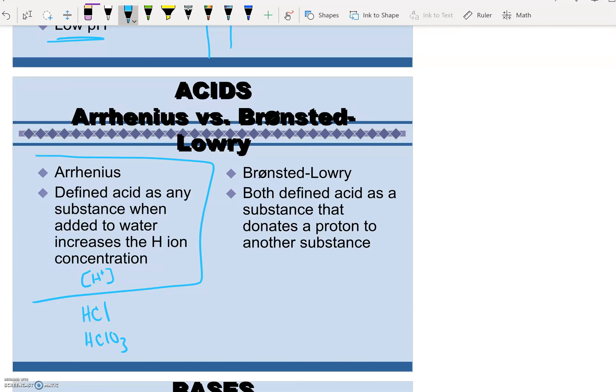But Bronsted-Lowry's definition, after you get out of Chem 1, this is always the go-to definition of acids because something can be classified as an acid without having an H in the front. So Bronsted-Lowry says that acids is a substance that donates a proton to another substance. If you need to pause the video to write down your notes, please go right ahead and pause.